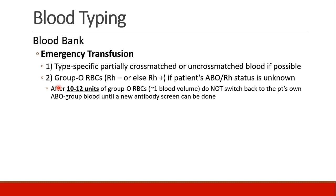In an emergency, we can give patients blood before this process has been completed. If we know the patient's blood type, we can give them type-specific blood — partially cross-matched or even uncross-matched. If we don't know the patient's blood type, then we give them type O red blood cells — O negative — unless we know for sure that the patient could accept O positive blood. It really depends on how little we know about our recipient patient.